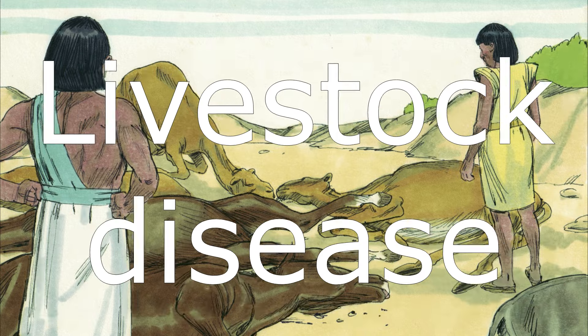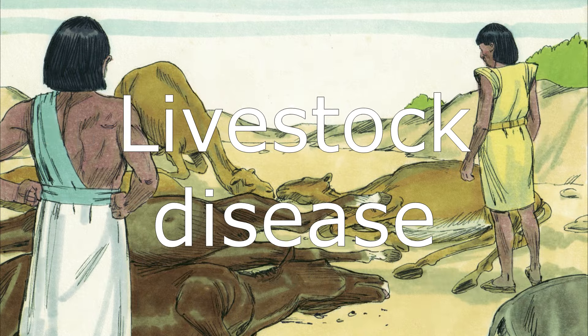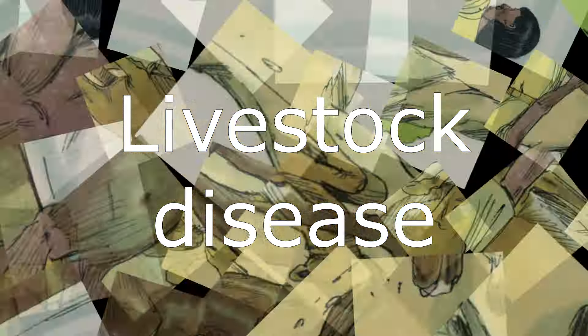God killed all the animals that belonged to the Egyptians, such as cows, horses, sheep, and camels. But he spared the animals that belonged to the Israelites.